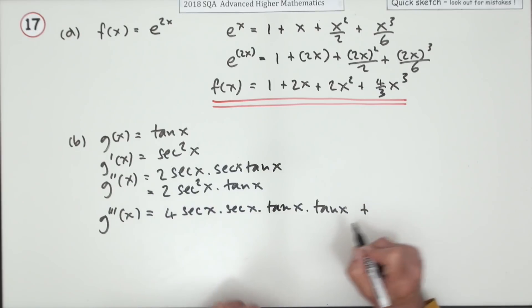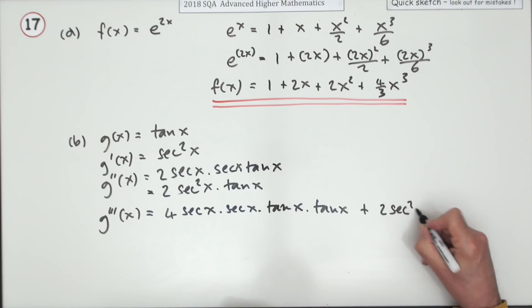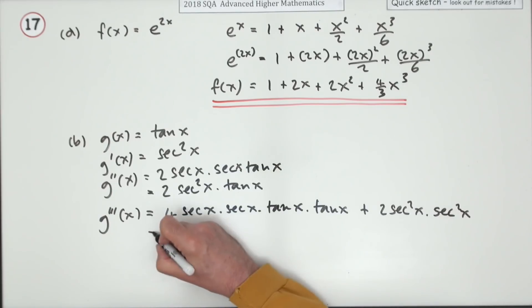Now that's been done. Now leave that alone. 2 sec squared x differentiate tan x and that's another sec squared x. Now tidy that lot up.